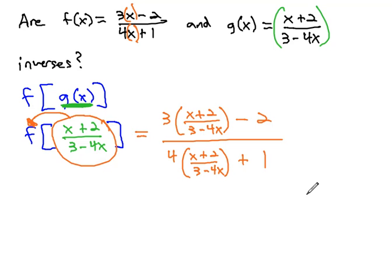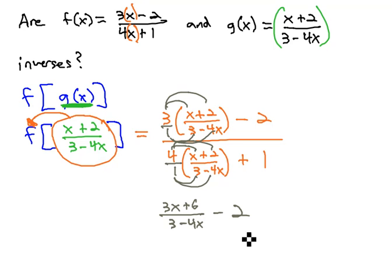To make this a little easier to work with and simplify, we want it to simplify to x. If it simplifies to x, they're inverses. Let's remember that 3 is 3 over 1 and 4 is 4 over 1, and we can multiply fractions straight across. So let's distribute the 3 and distribute the 1, distribute the 4, and distribute the 1. That's going to give us 3x plus 6 over 3 minus 4x minus 2, all over 4x plus 8 over 3 minus 4x plus 1.